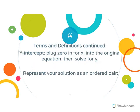The next term is the y-intercept. On the last set of notes, we found x-intercepts by plugging 0 in for y and solving for x. This time, for the y-intercept, we plug in 0 for x into the original equation and solve for y. You represent the solution as an ordered pair — a point that always looks like 0 comma whatever y-value you get.